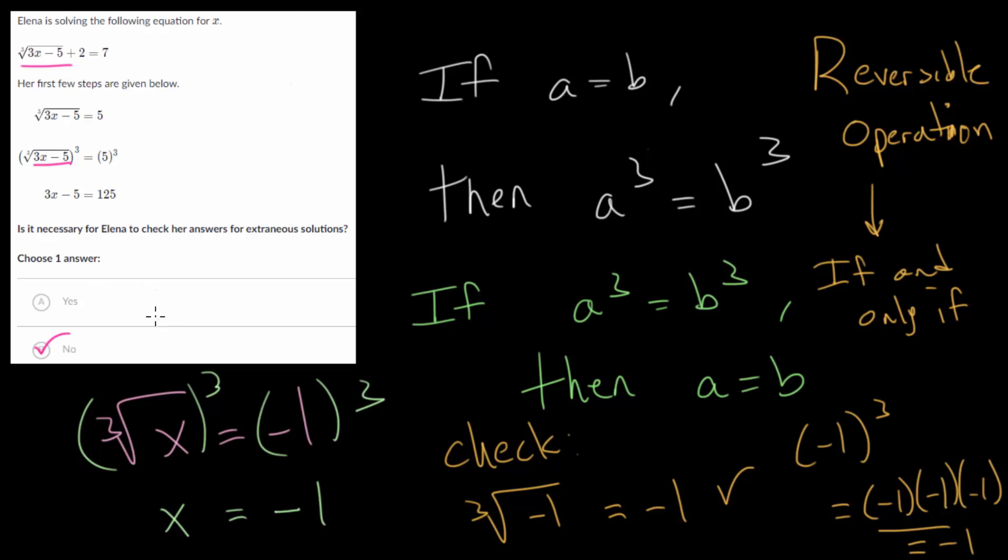So if you see a problem like this, you only need to check if you have to raise it to some even power to solve the equation. Or in other words, if you're radical here, if this is some even root, like the fourth root, the second root, or maybe the twelfth root, then you do have to check for these solutions. But if it's the cubed root, the fifth root, the seventh root, and so on, you don't need to check for those extraneous solutions, or you won't find extraneous solutions.